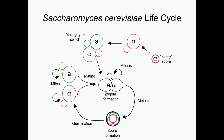This preference for diploidy is so strong that if a haploid cell finds itself alone without a mating partner, then after dividing once, a mother cell will switch mating type before dividing again, thus ensuring that both it and its daughter have a suitable mating partner.